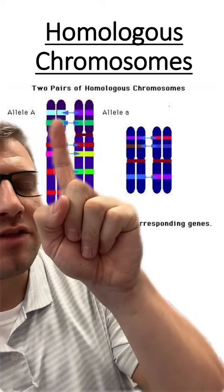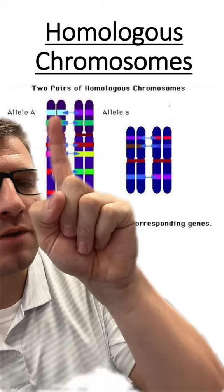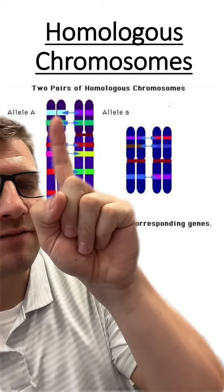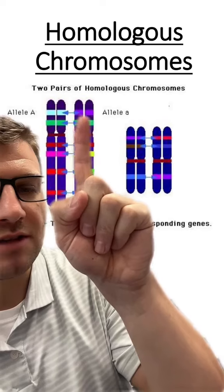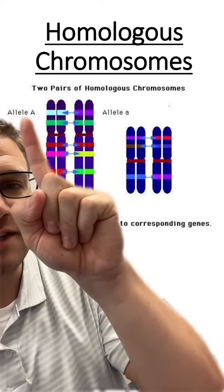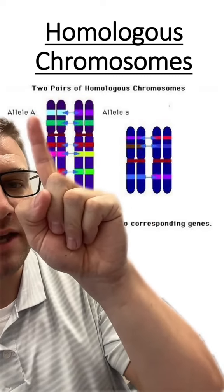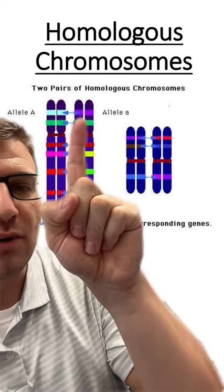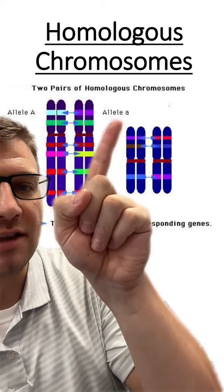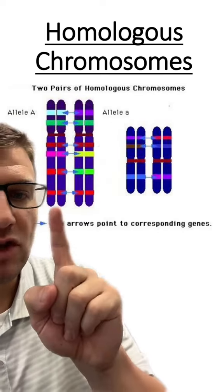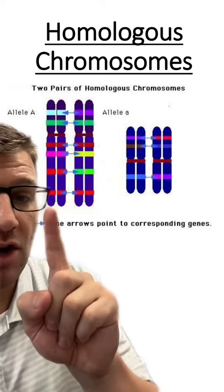Even though they're homologous chromosomes, they might have different alleles for these genes. As you can see, this left chromosome has the big A, and this right chromosome has the little a.